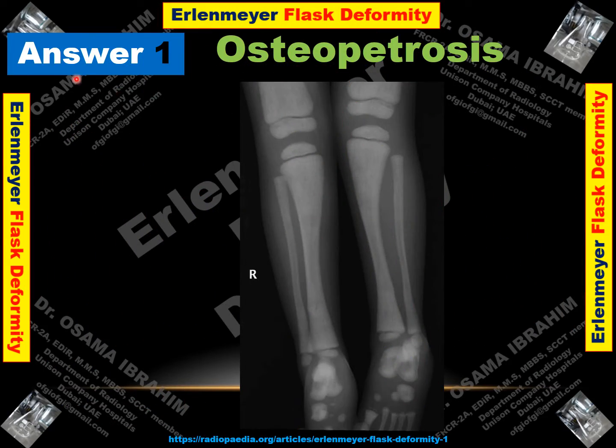The other name of osteopetrosis is Albers-Schönberg disease or marble bone disease, due to brittle bones with recurrent fractures caused by this osteosclerosis and defective osteoclast function. So the answer to scenario one is osteopetrosis, due to diffuse osteosclerosis and Erlenmeyer flask deformity.